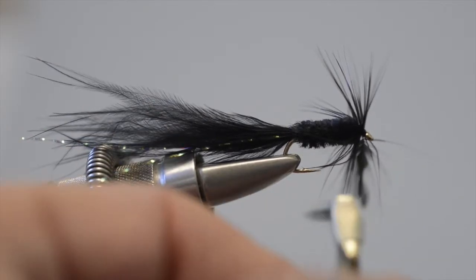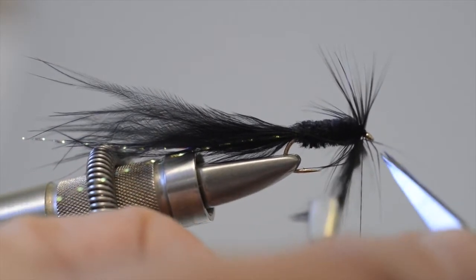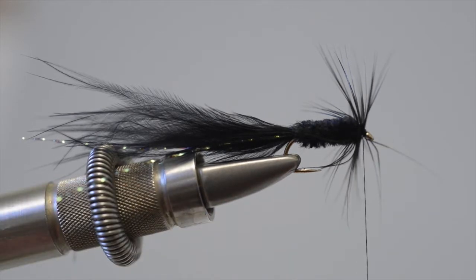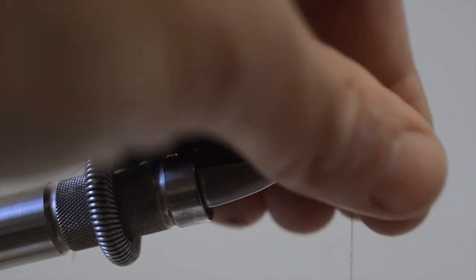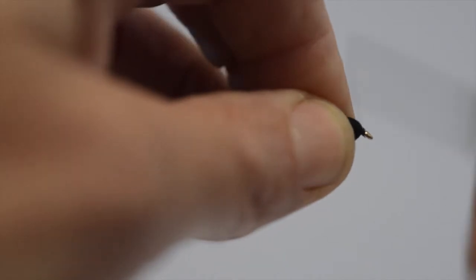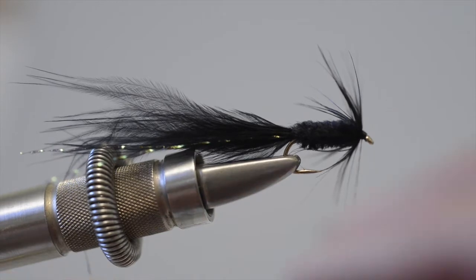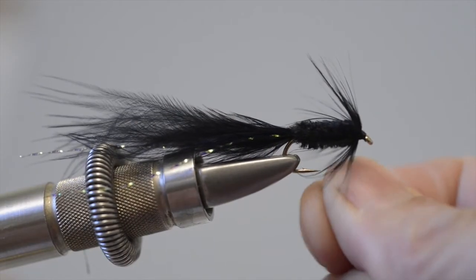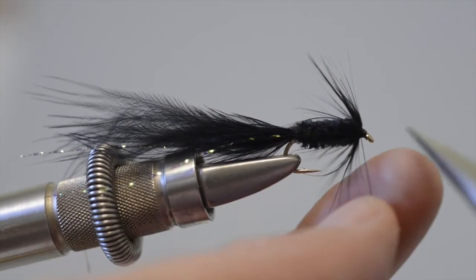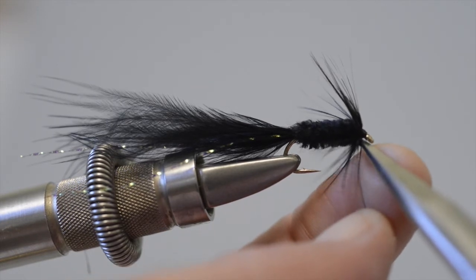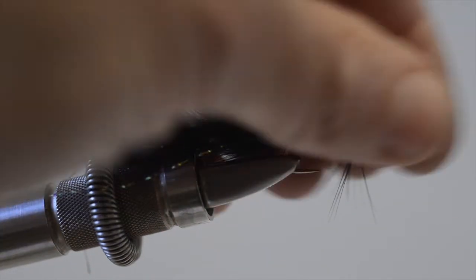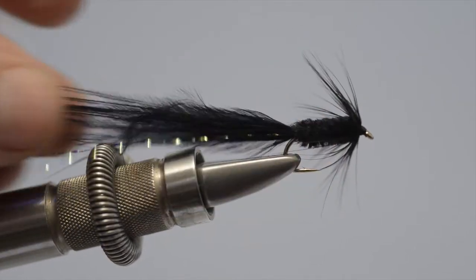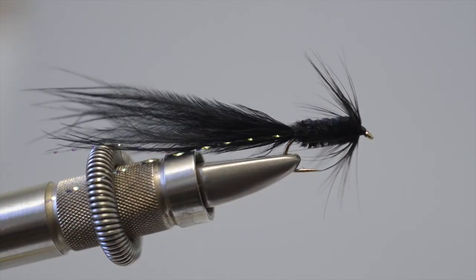Right, now we just carefully remove the tip, draw the fibres back, and just build a small, neat head. To complete, just create a two-, three-, four-turn whip finish. Again, pull the thread tight, and remove the thread. And there we are, one black tadpole.